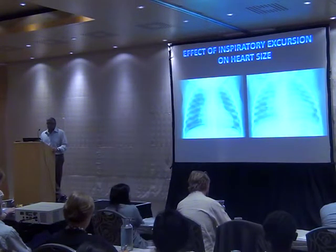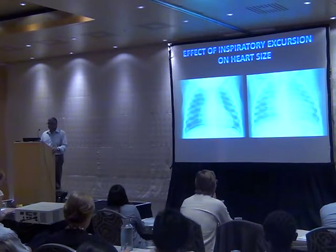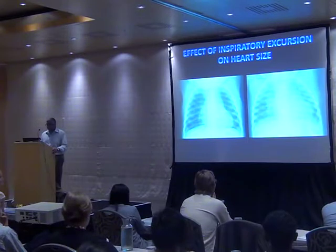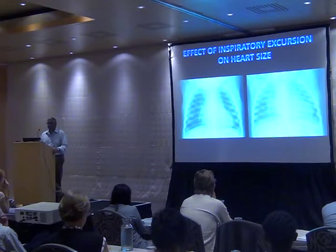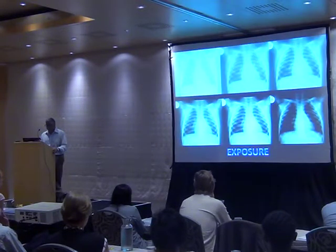Here are two radiographs of the same patient illustrating technical issues that might give rise to erroneous interpretation. On adequate inspiration, the heart appears normal. On poor inspiration, we have a big heart, exaggerated parahilar bronchovascular markings — people might interpret that as pulmonary plethora and ascribe an underlying congenital heart anomaly.